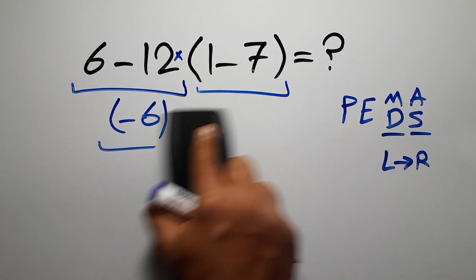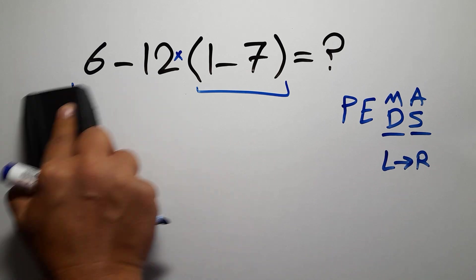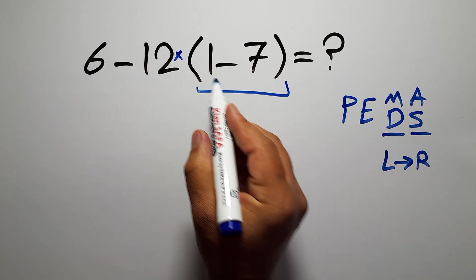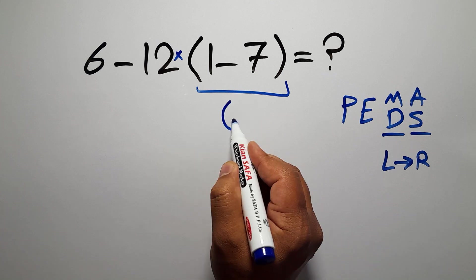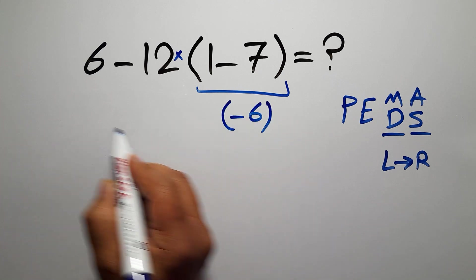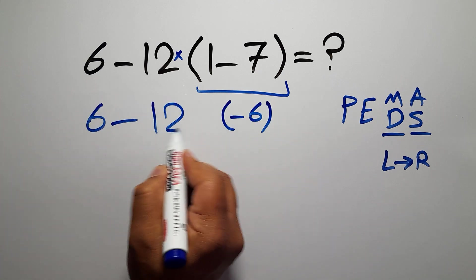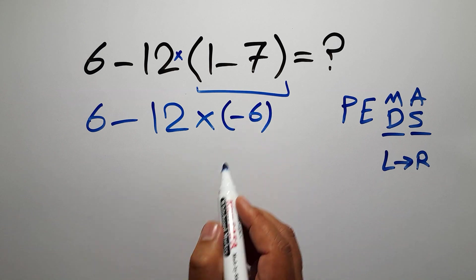Okay, so first we have to do our parentheses. Inside this parentheses we have 1 minus 7, which gives us negative 6. So 6 minus 12 times negative 6.